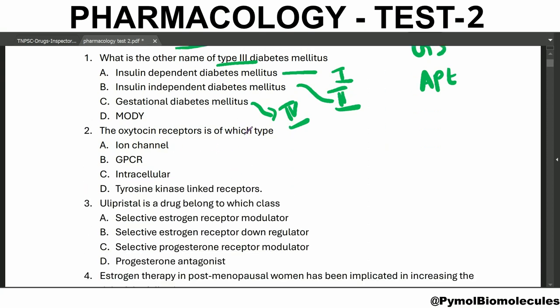Oxytocin receptors are of which type? They are called GPCR type. Ulipristal is a drug belonging to which class? It is a selective progesterone receptor modulator.